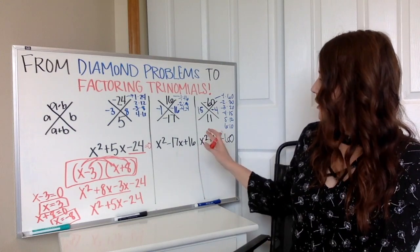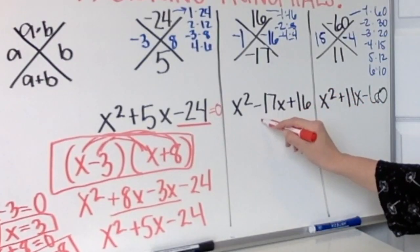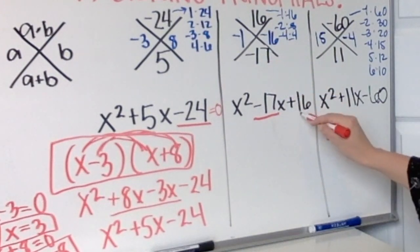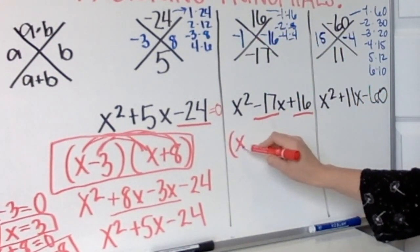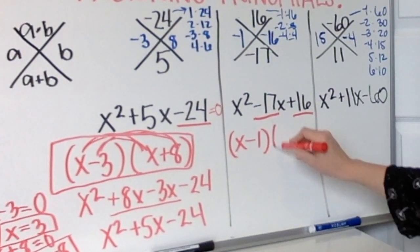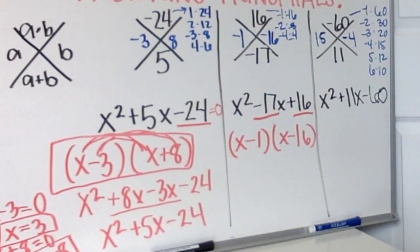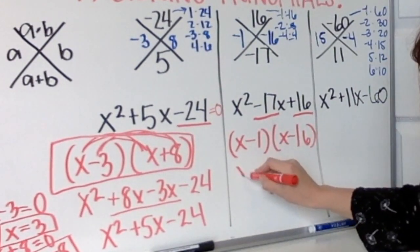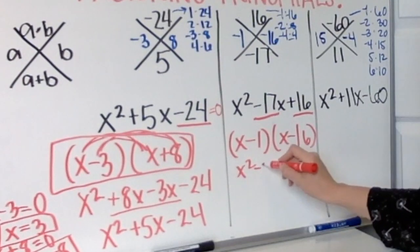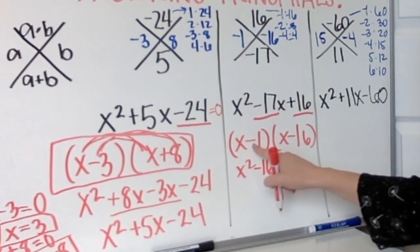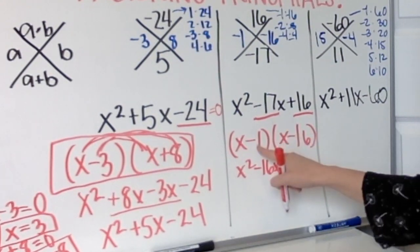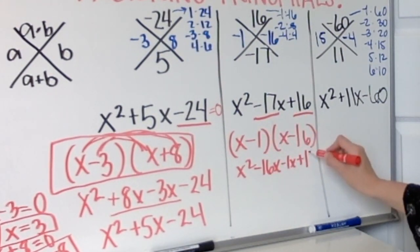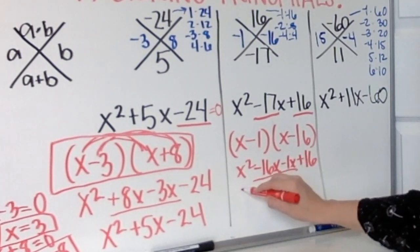The second one here, same thing, we want two numbers that add to get us negative 17 and multiply to get us 16, which we already decided was x minus 1, x minus 16. Again, you could distribute out: x times x is x squared, x times negative 16 is negative 16x, negative 1 times x is negative 1x, negative 1 times negative 16 is plus 16. Combine my like terms.